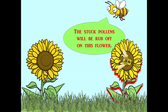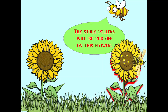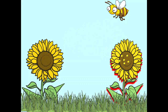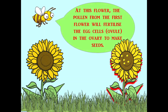The stuck pollen will be rubbed off on this flower. The pollen from the first flower will fertilize the egg cells in the ovary to make seeds.